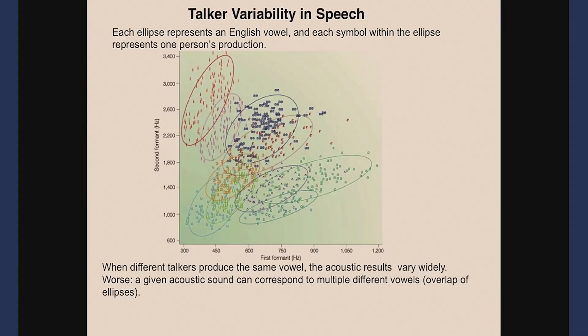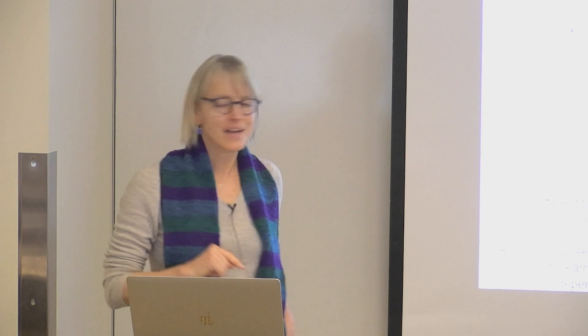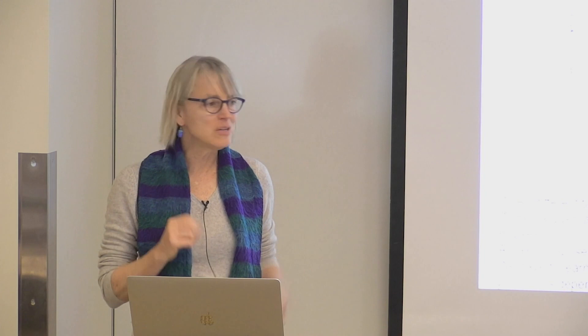This is another classic ill-posed problem in perception: given a point in formant space, how do you tell which vowel it is? One way we solve that is by learning each other's voices — we know how a given person pronounces vowels and use that to constrain what they're saying. You probably experienced this with the Xhosa speaker: at first his English was hard to understand but after even just a few words you tune right in. Learning about an individual's voice helps you unconfound voice properties from speech content.